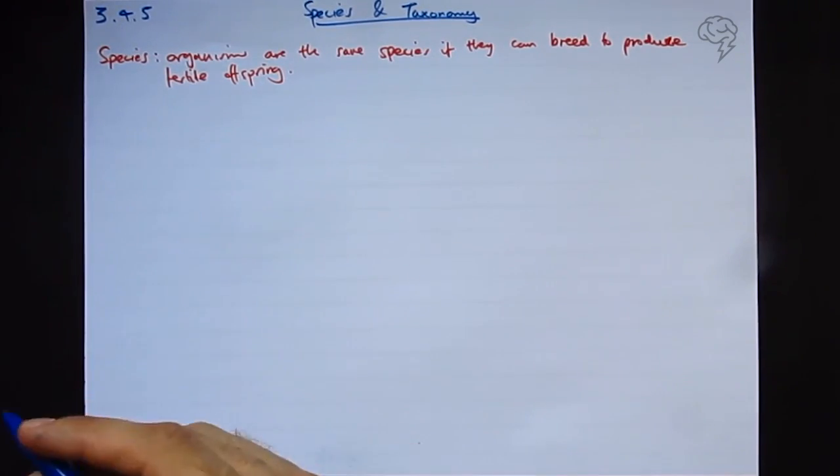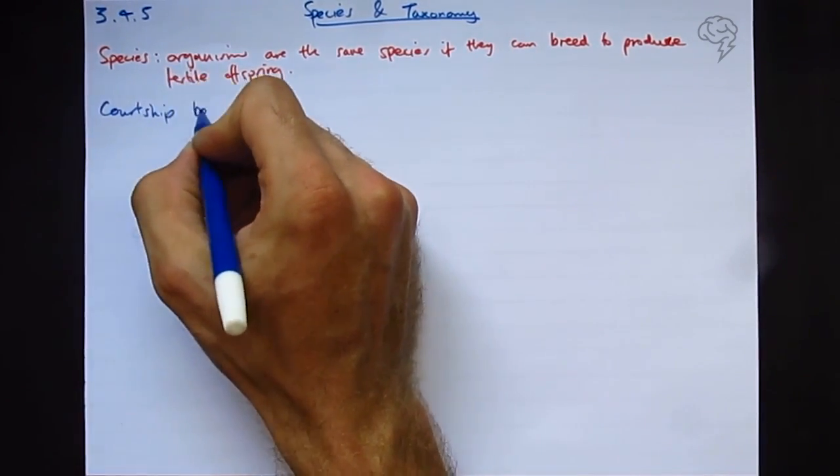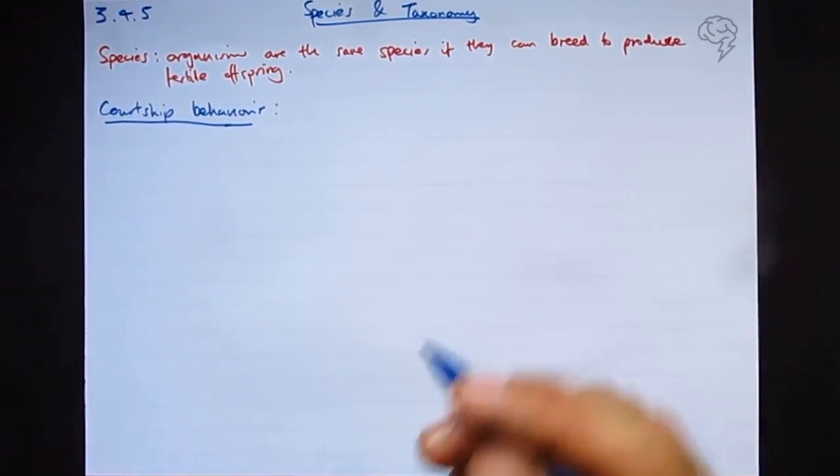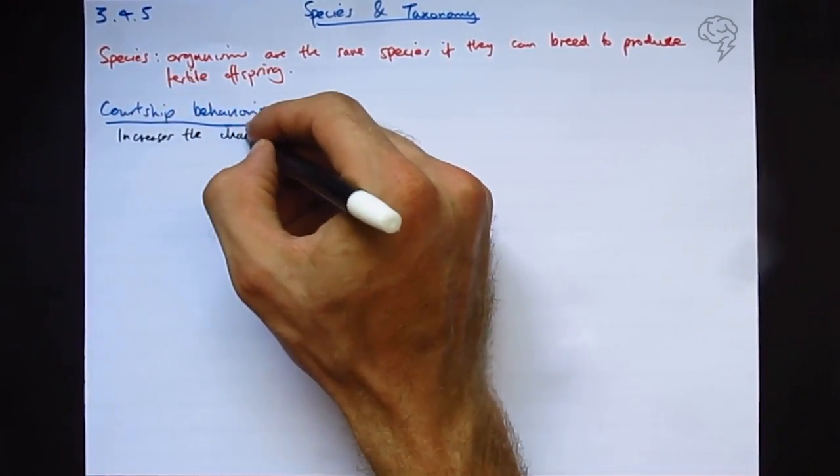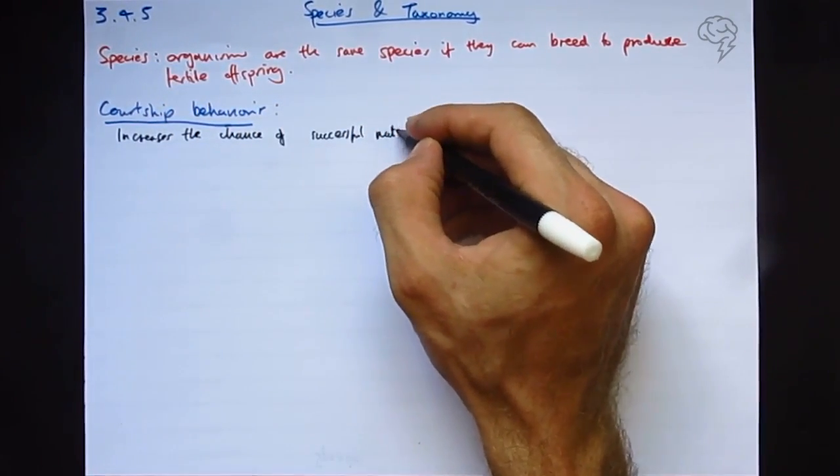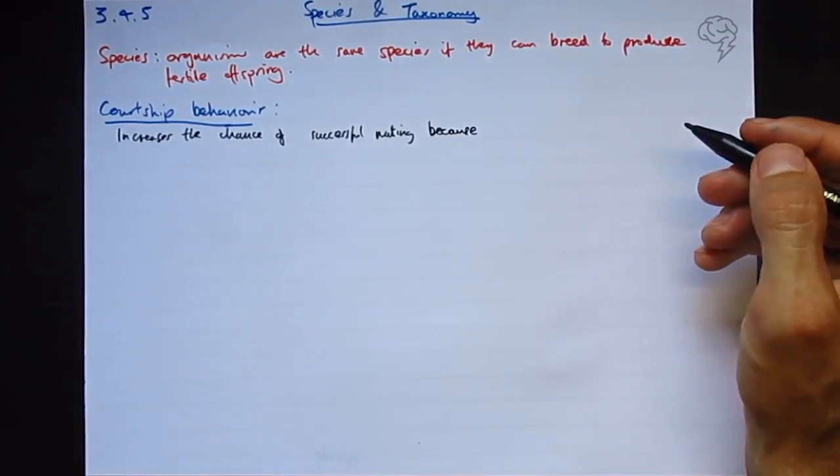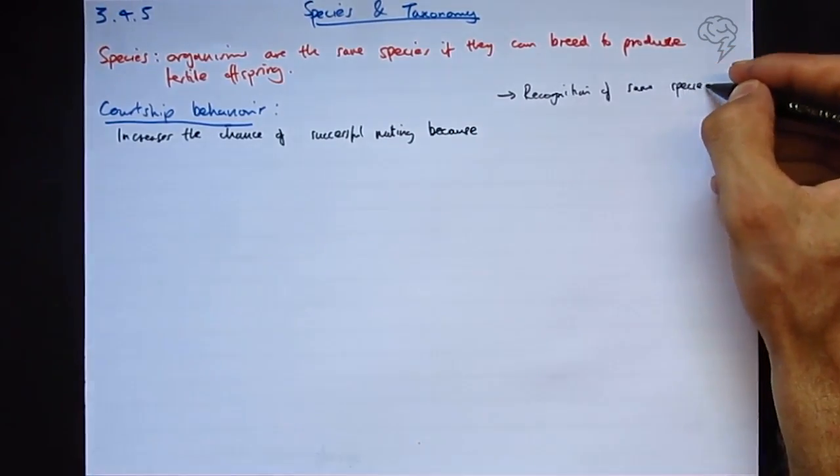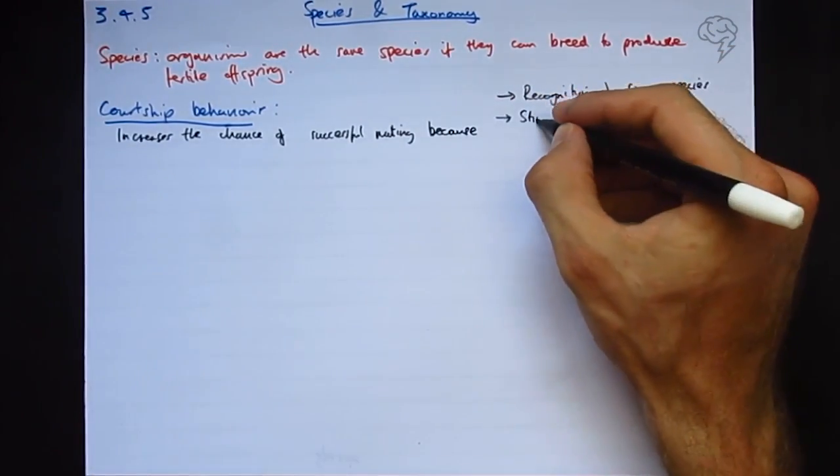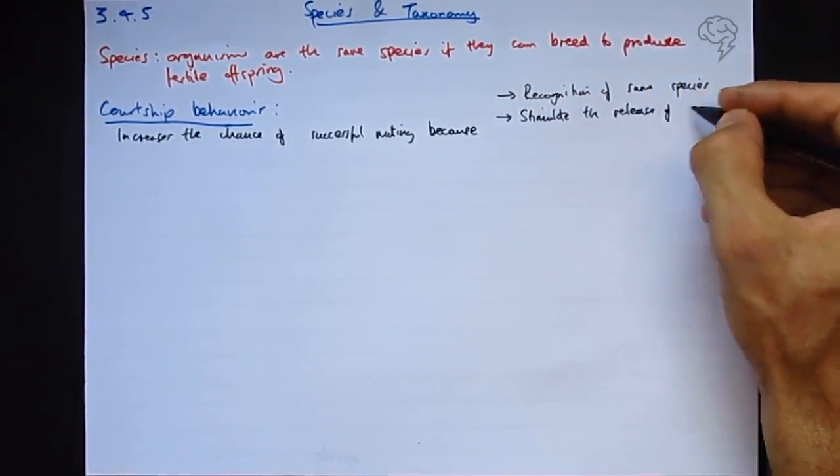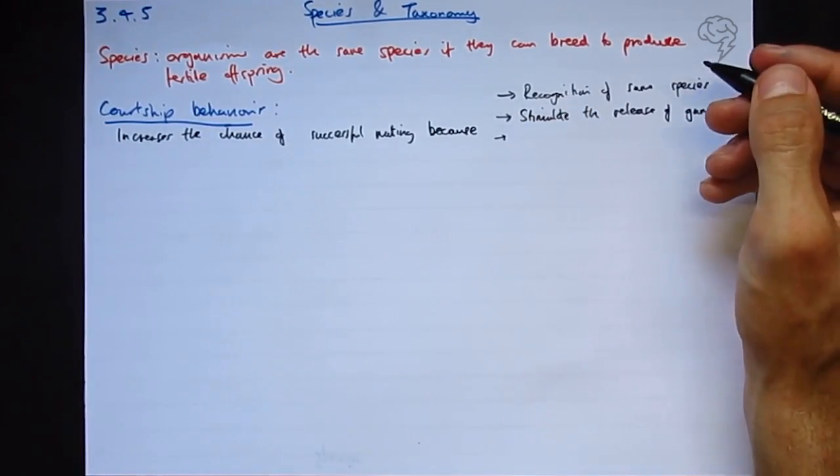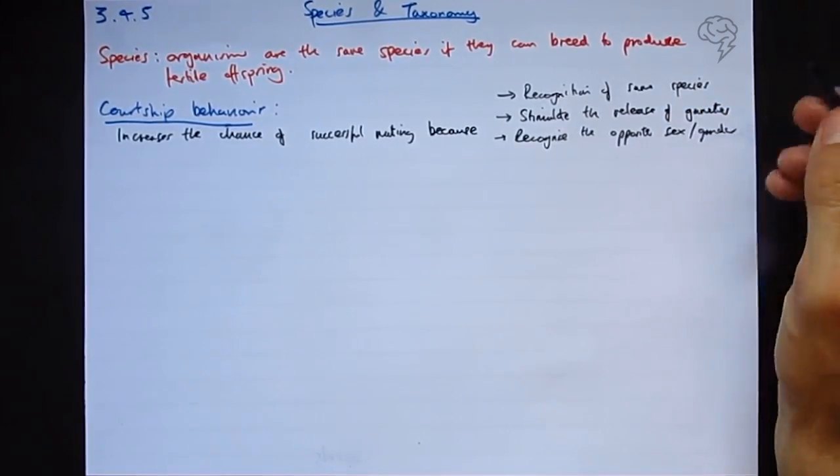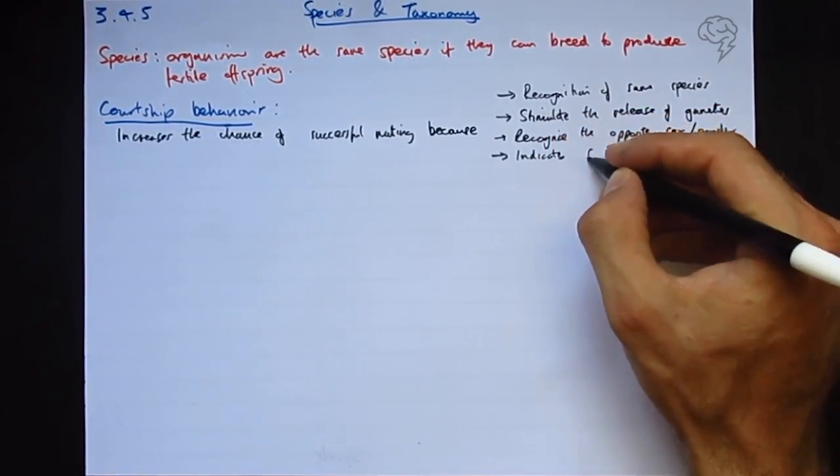Something we need to know in this part of the course is about courtship behavior. Courtship behavior basically increases the chance of successful mating because of a few reasons. We've got recognition of the same species, only the same species will have the same courtship behavior. It will stimulate the release of gametes, it will mean that you can recognize the opposite sex or gender, and it also indicates that they're sexually mature.